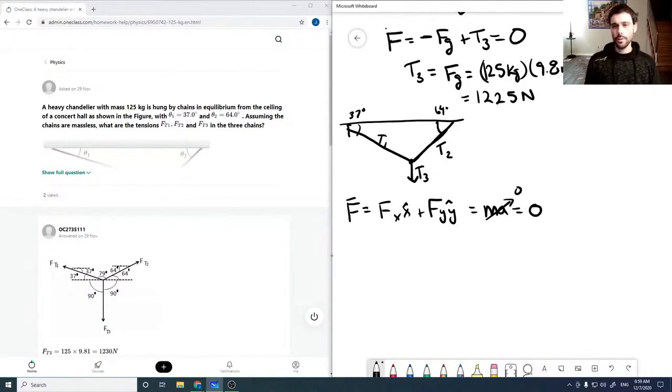So now, looking at our x-component forces. Our x-component forces are going to be, if we draw these as similar triangles. So this is still 37 degrees here, which means that this here is T1 cosine of 37 and this here is T2 cosine of 64.